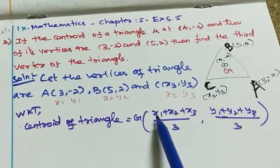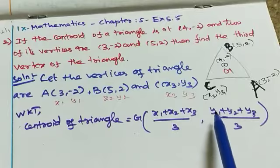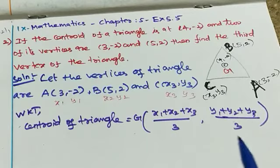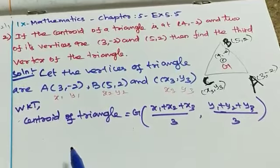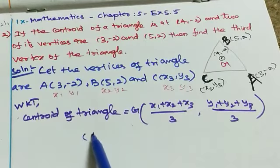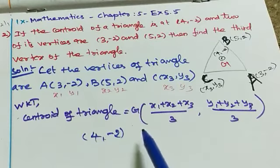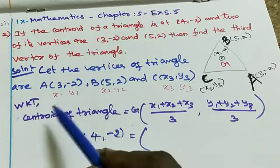The centroid of a triangle formula is ((x1 + x2 + x3)/3, (y1 + y2 + y3)/3). Now we substitute the values. The centroid is given as (4, -2).